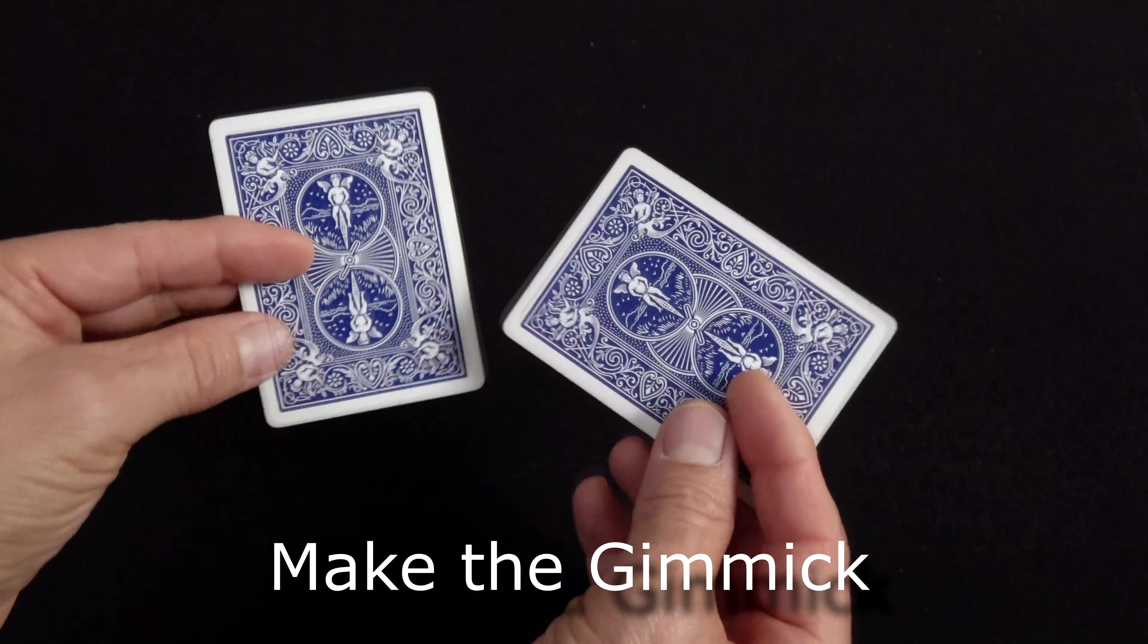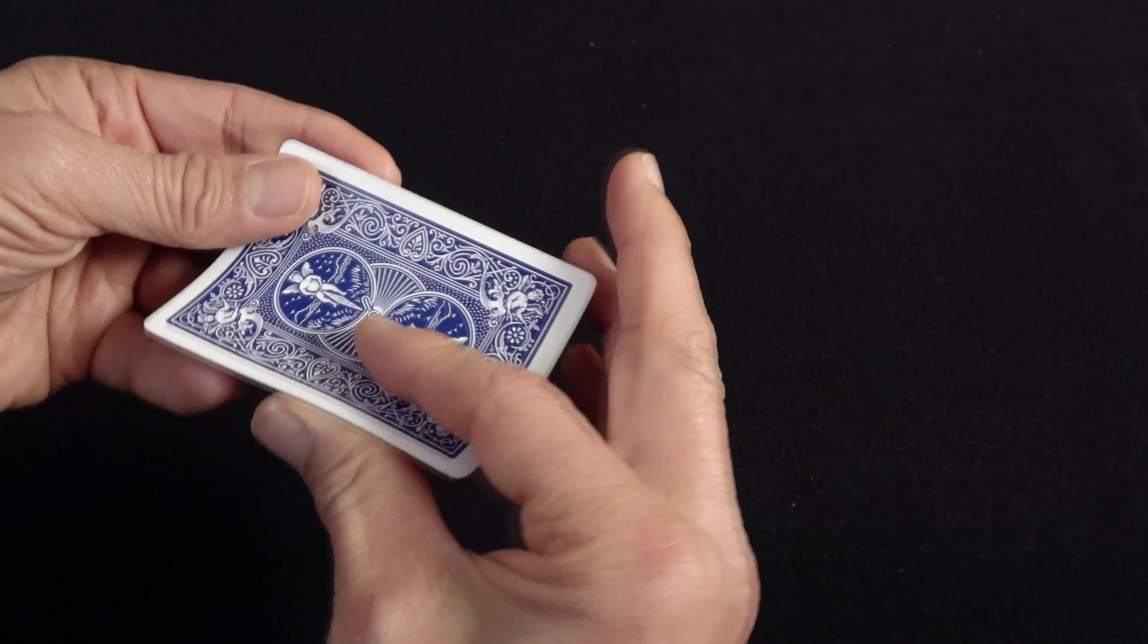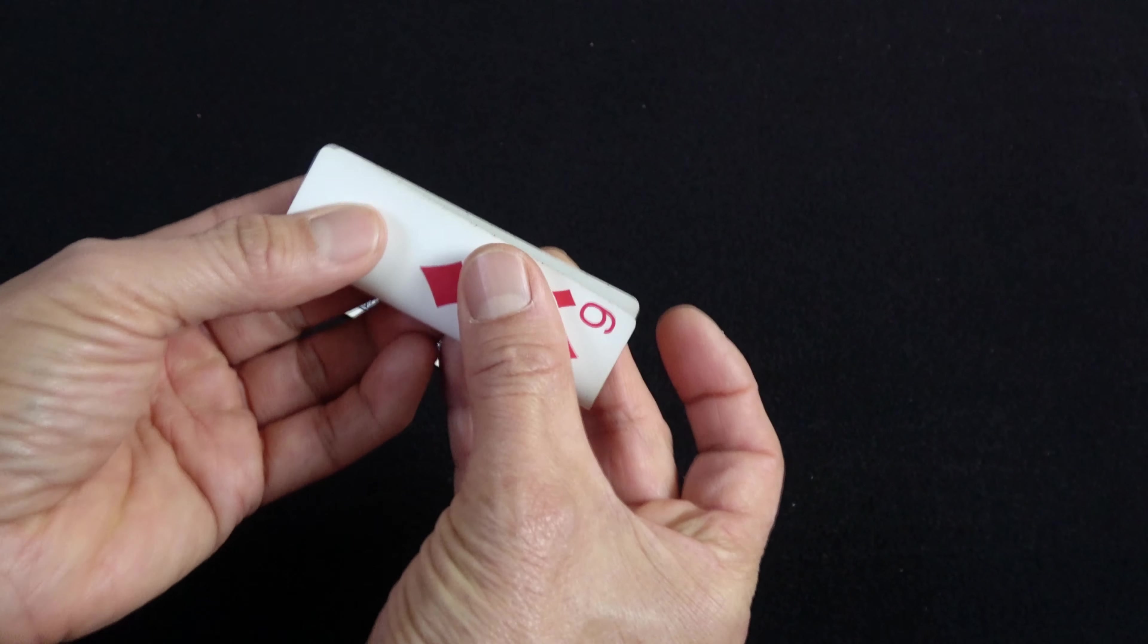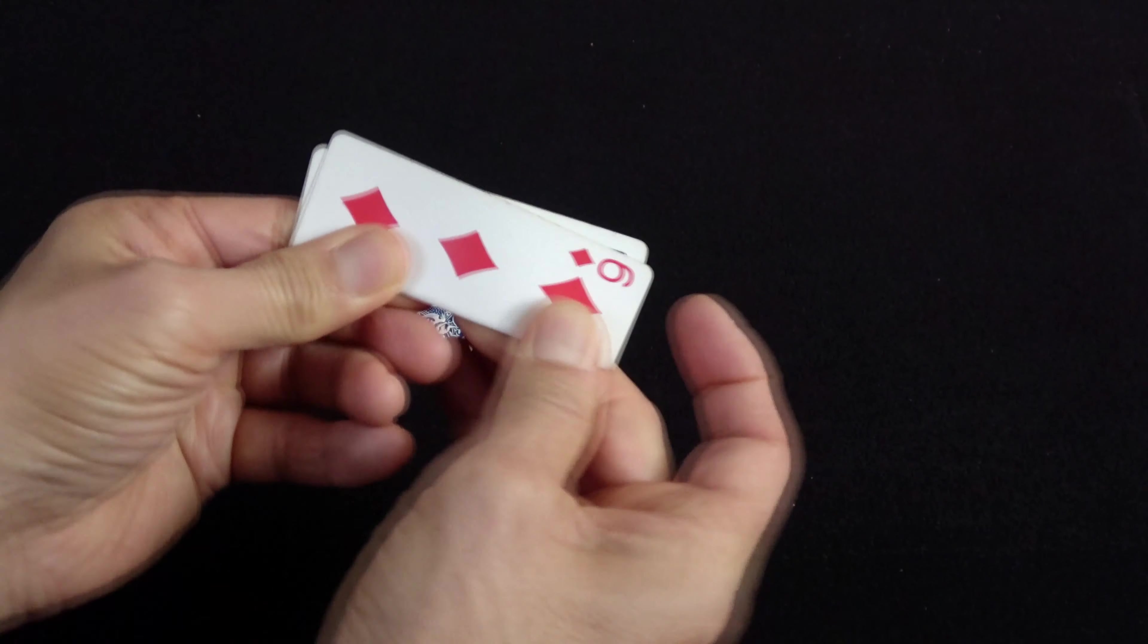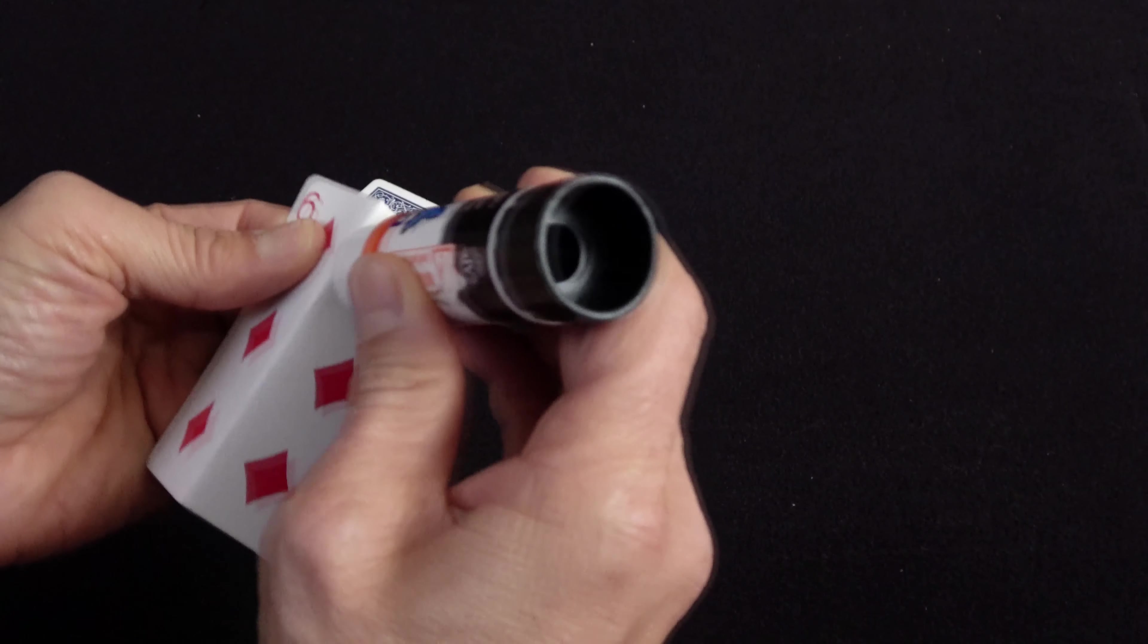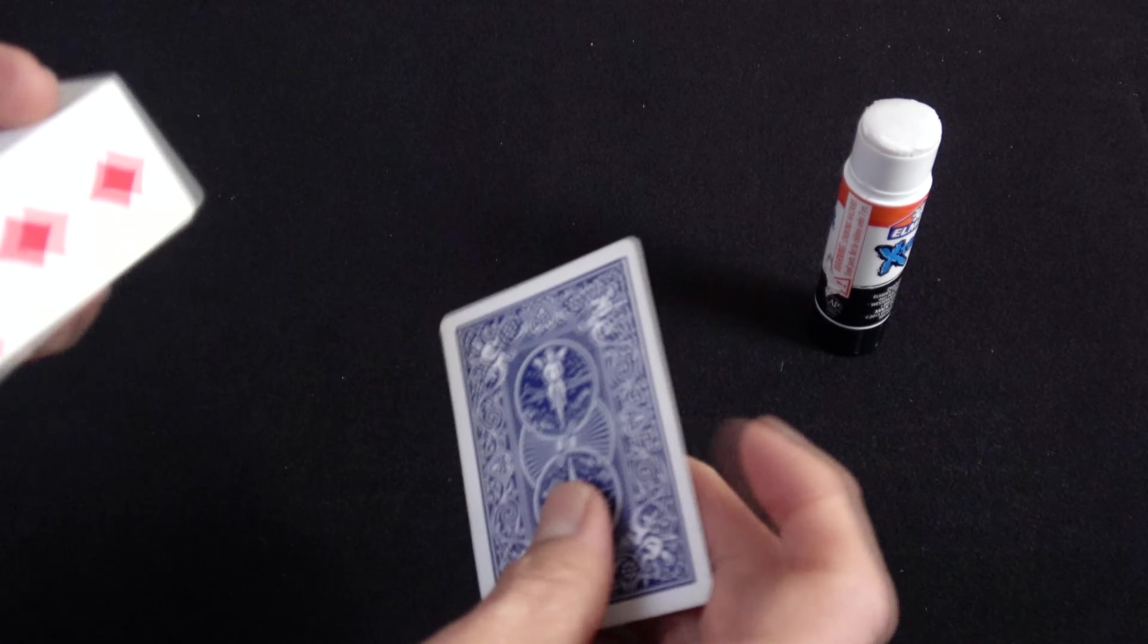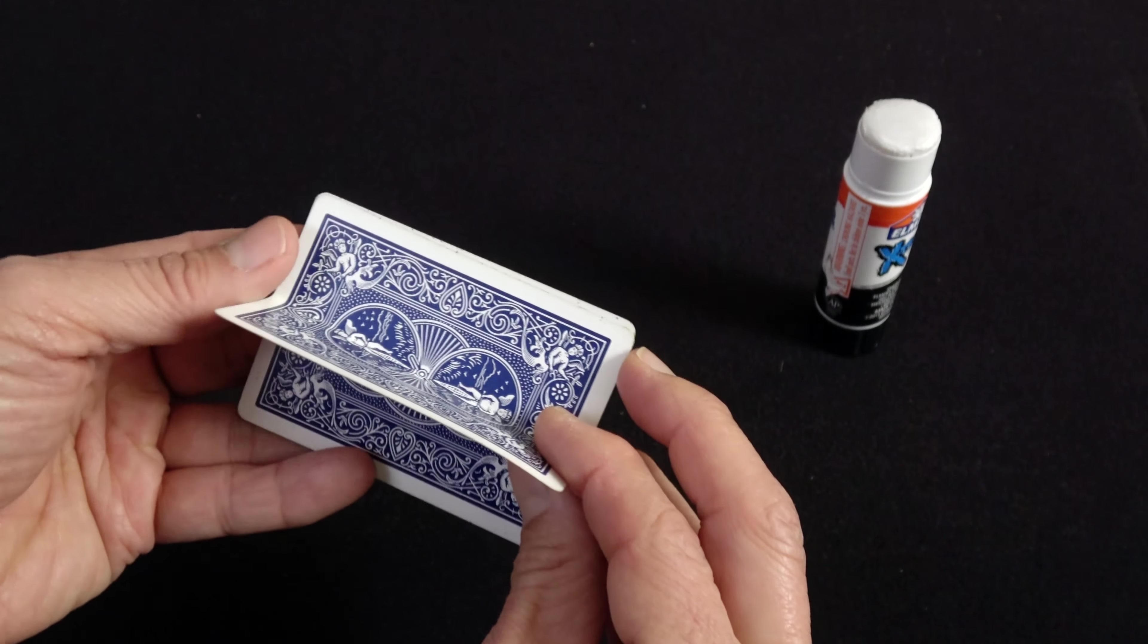For your gimmick you're going to need two playing cards. Take one of the cards and fold it in half this way lengthwise. But what I want you to do is not fold it straight but fold it at a slight angle, just like that. This will assist you later when you perform the trick. Take some glue and place it on half of the card.